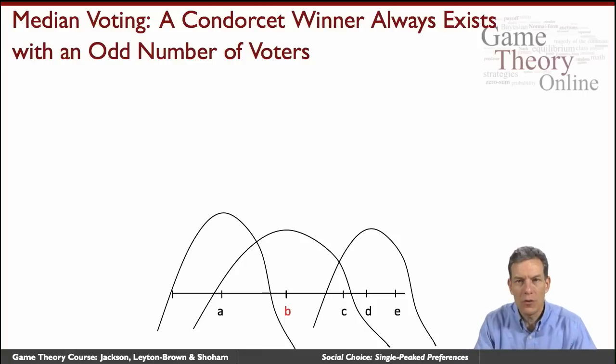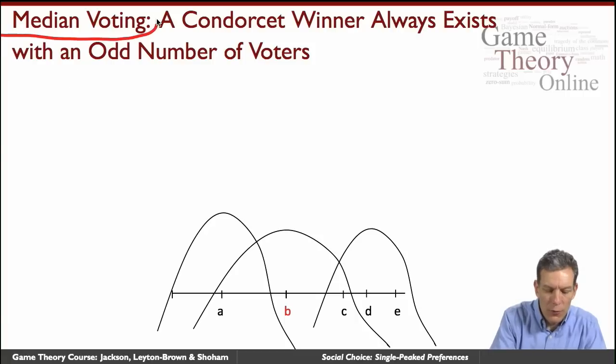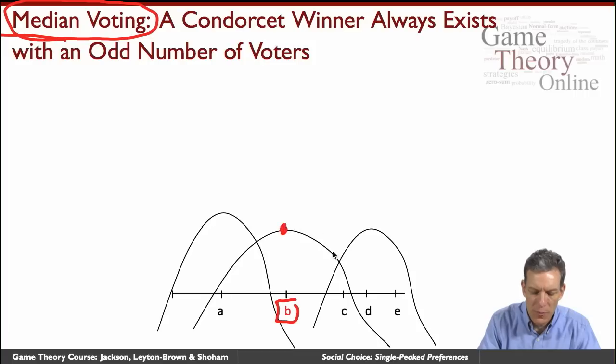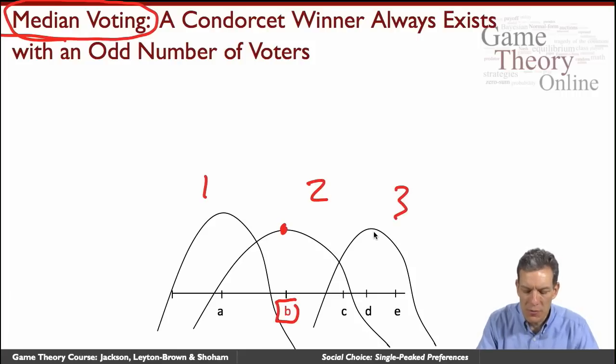So imagine we had three voters that have single peaked preferences and we had our A, B, C, D, E. So we'll keep an odd number of voters to make sure we don't have to worry about ties. What's true then is if we look at the median most preferred outcome, that's going to be a Condorcet winner. So in this case, that's B. So B is most preferred by this middle person. So let's call this person 1, person 2, person 3. Person 3's most preferred alternative is D. Person 1's most preferred alternative is A.